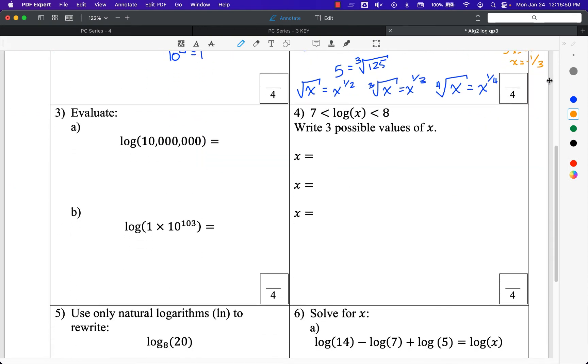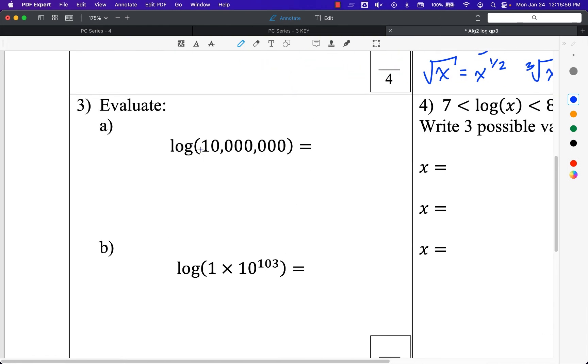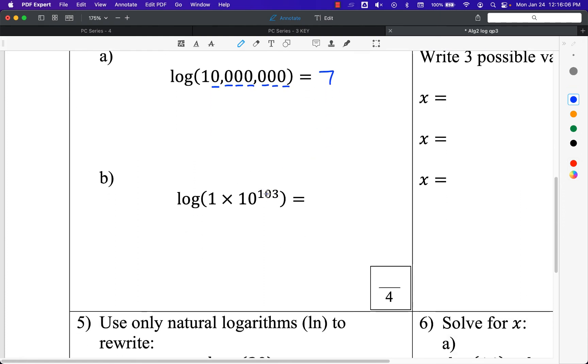Moving on to number 3, part A. Whenever you have log base 10, it's basically asking how many zeros do you count. This has 7 zeros. It's that easy. And with scientific notation, it's even easier. The easier way is to say, that's the answer, 103. The harder way of thinking about it is saying this is log base 10, 1 times 10^103. Log base 10 of 10 is just 1. This power would come down in front. Log base 10 of 10 cancels each other out, and I'm left with just that 103 that isn't canceled out.